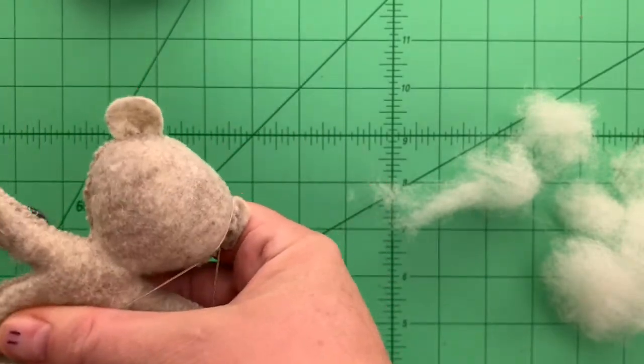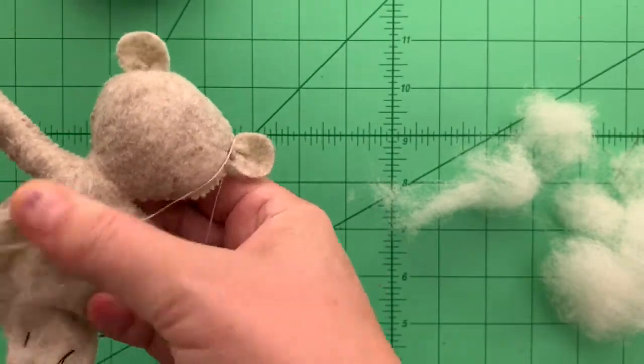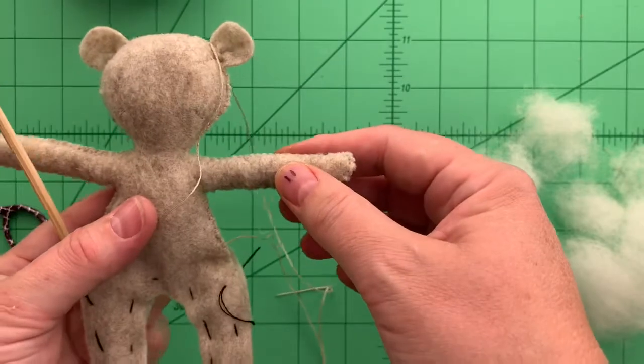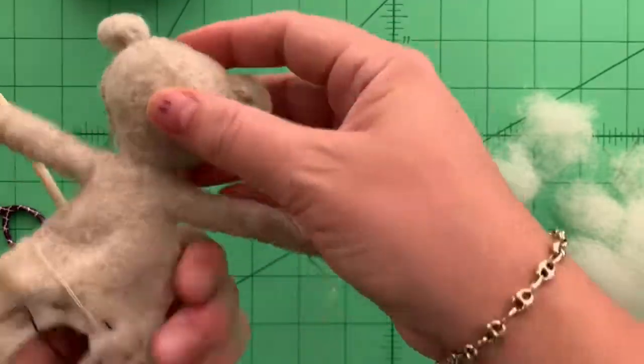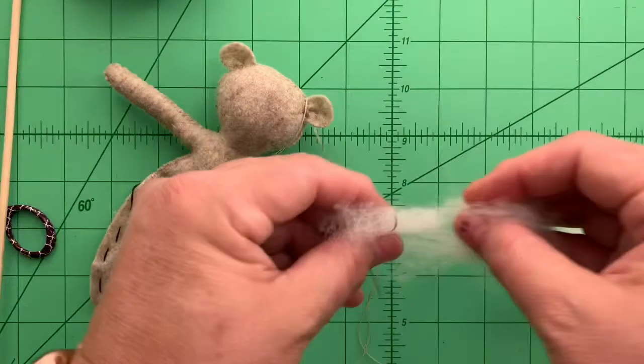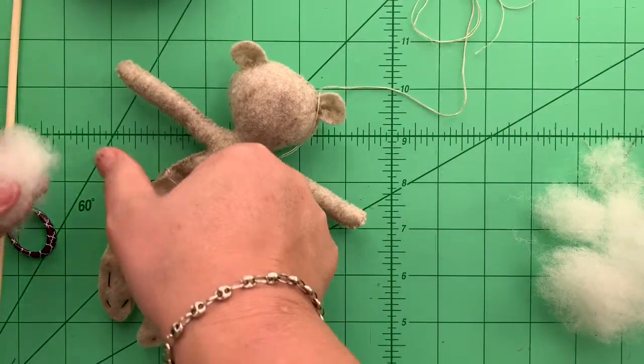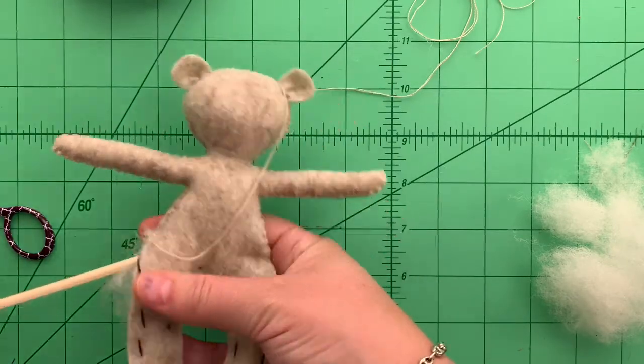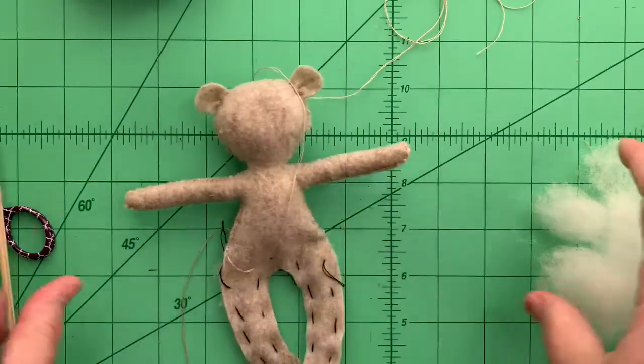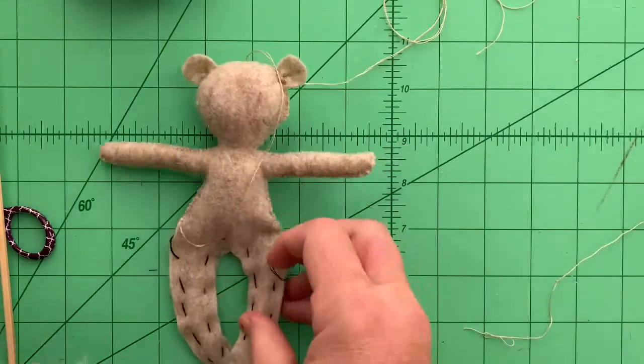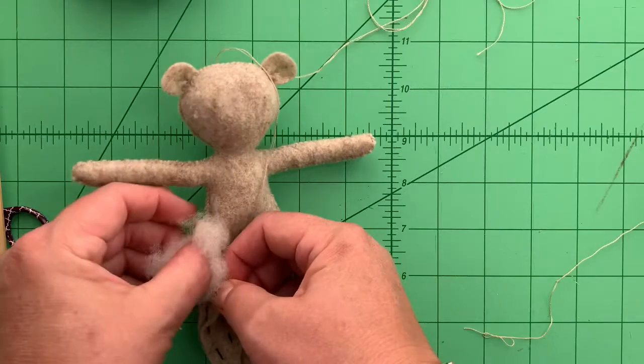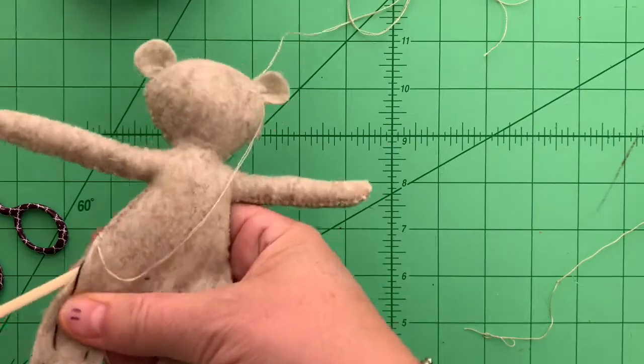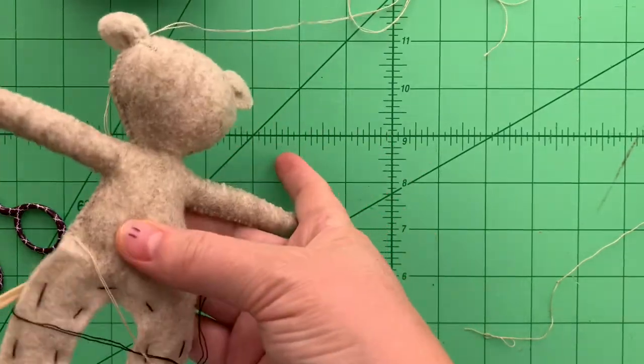You just need to be careful working around the area. Use the pointy end in here, kind of shove the roving up into his little neck and around the wires. Just be careful that you don't poke through your felt, but his head, look at that, it's pretty good. I'm gonna put some in the back here too. He's got a bit of a chest now.